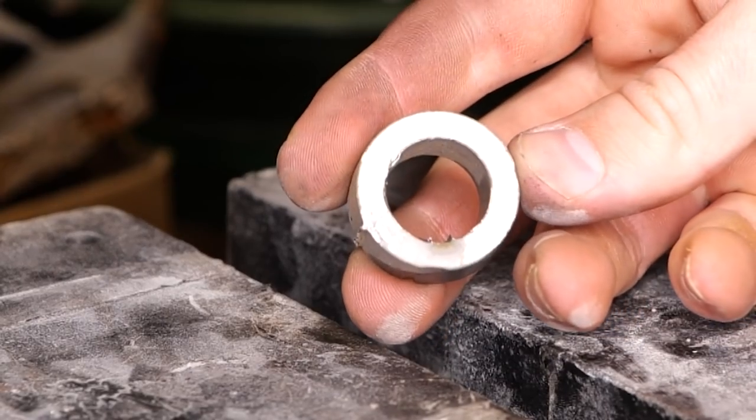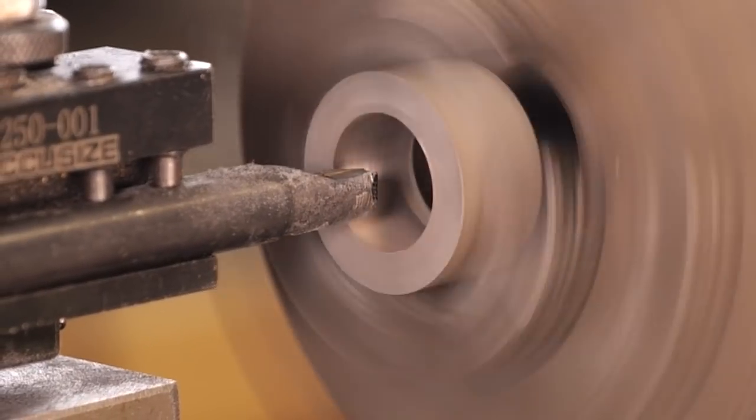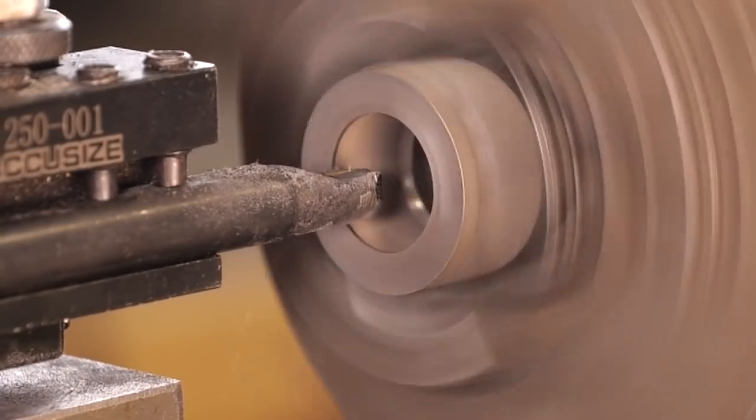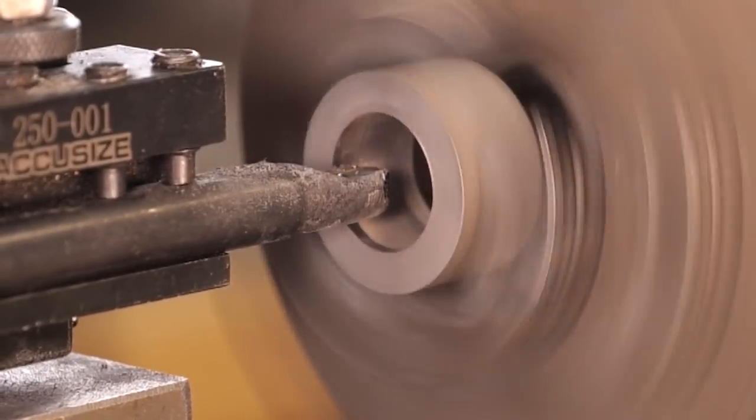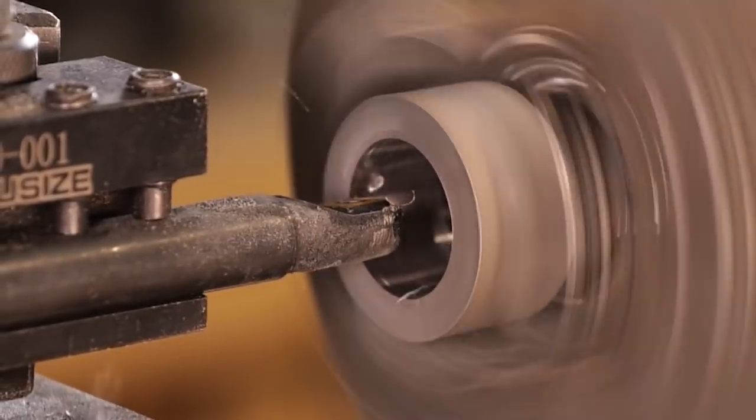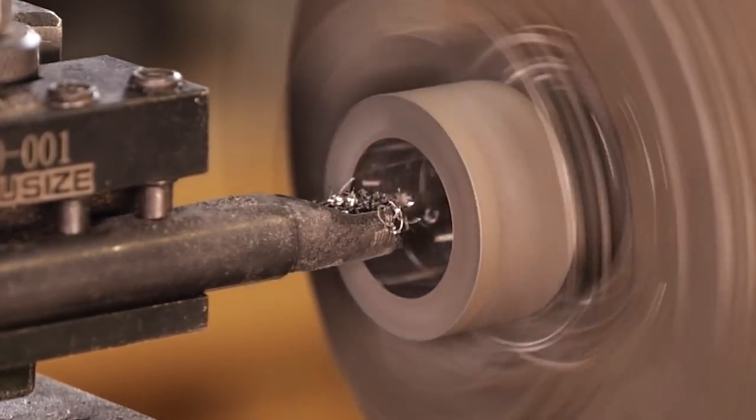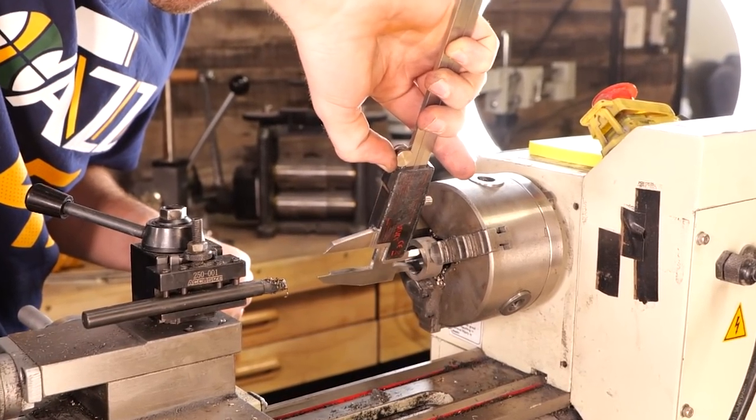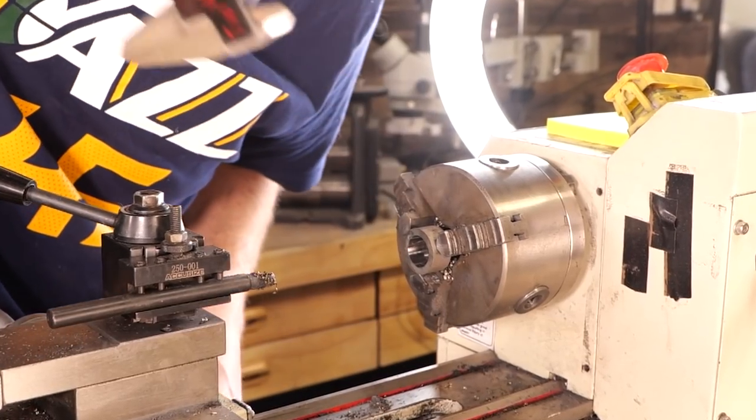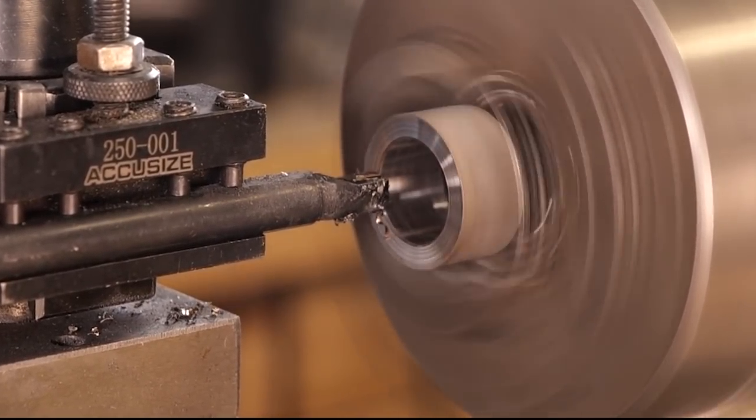Now using a boring bar, I'm going to go ahead and widen out the inside diameter. We'll get that right to the size that we want. You'll notice while I'm at it, I'm also truing up that outside edge.